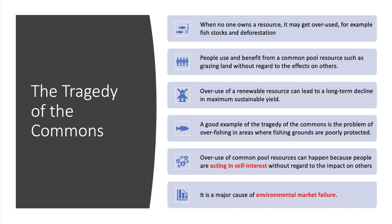That overuse of what should be a renewable resource can lead to a long-term decline in the maximum sustainable yield of the resource — in other words, natural capital depletes. A really good example is overfishing in areas where fishing grounds are already poorly protected. The tragedy of the commons is essentially a property rights issue, but it's also to do with the self-interest of individuals not thinking about the common good — the social costs and social benefits. The tragedy of the commons is clearly a major environmental market failure.